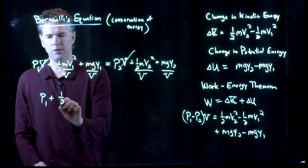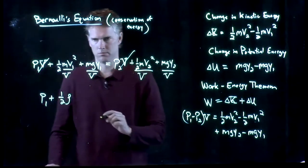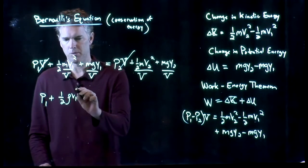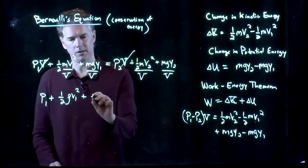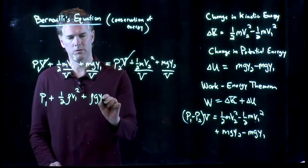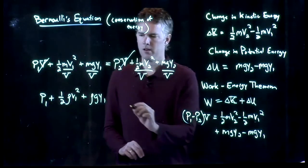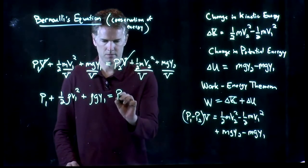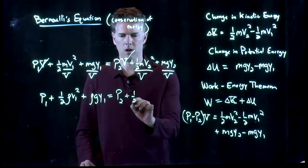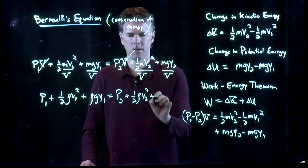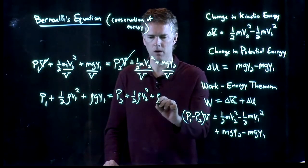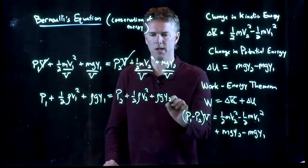And that looks pretty good because mass over volume is density. And so this becomes rho times V1 squared. Mass over volume, that's density. Rho G Y1. The right side: P2 plus 1/2 rho V2 squared plus rho G Y2.